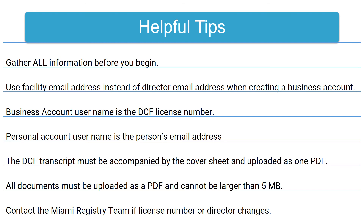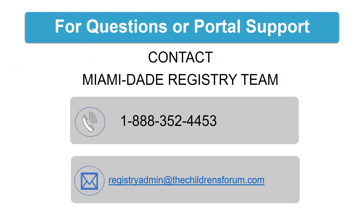Here are a few helpful tips: gather all necessary documents before beginning any step in the process. Enter a facility email address instead of a director email address when creating a business account. The DCF license number is the business account username. Email address is the personal account username. The DCF transcript and cover sheet must be submitted as one PDF document. All documents submitted via the Children's Forum Portal must be in PDF format. Contact the Miami Registry Team if your license number or director changes, or if you have any questions or need support in the data submission process.